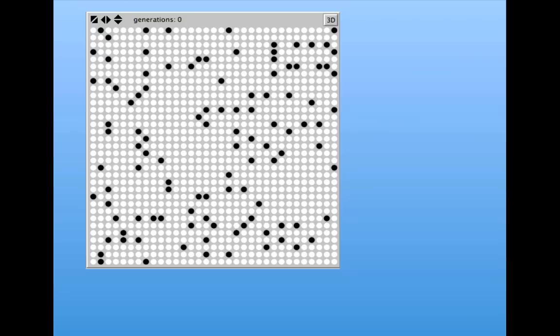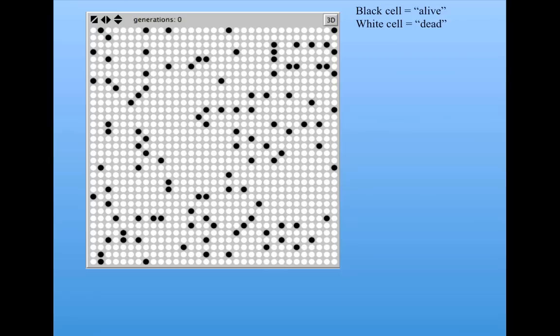As I showed you before, the Game of Life is played, or plays itself out, on a grid of cells. Here, the cells are represented as black and white circles. A black cell is said to be alive, and a white cell is said to be dead. This is Conway's terminology.